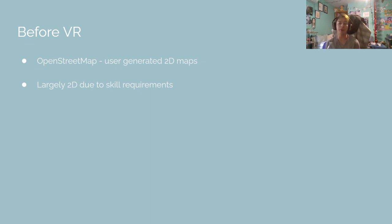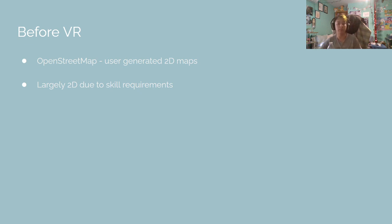Before VR began its journey in GIS, databases like OpenStreetMap allowed users to generate maps with high detail. These maps are largely limited to two dimensions, as the skill required for 3D modeling makes it more difficult than that of 2D modeling.